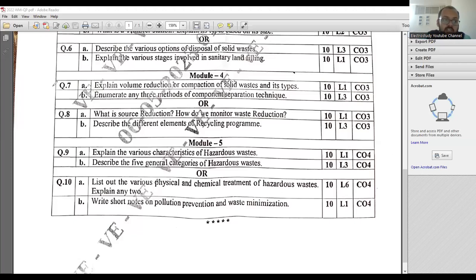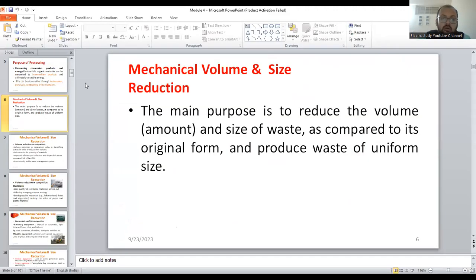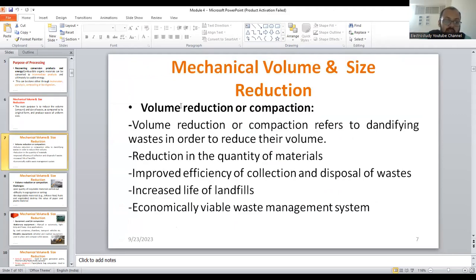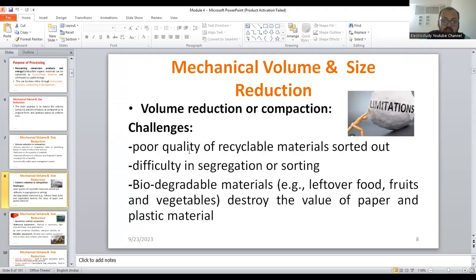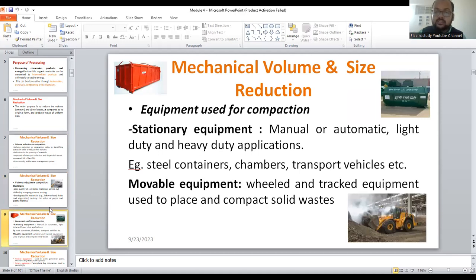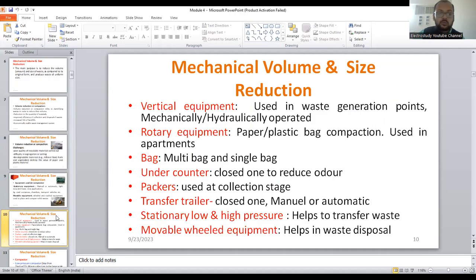Now I am going to discuss about question number 7a. Explain the volume reduction or compaction of solid waste and its type. You have to explain about the importance of volume reduction. It carries the weightage of 10 marks. Now what you can do is you have to explain about the mechanical volume reduction, importance of mechanical volume reduction. Why volume reduction is required? To convert the complex material into simple one. That's the purpose of volume reduction. We have to explain about the challenges of compaction if necessary.